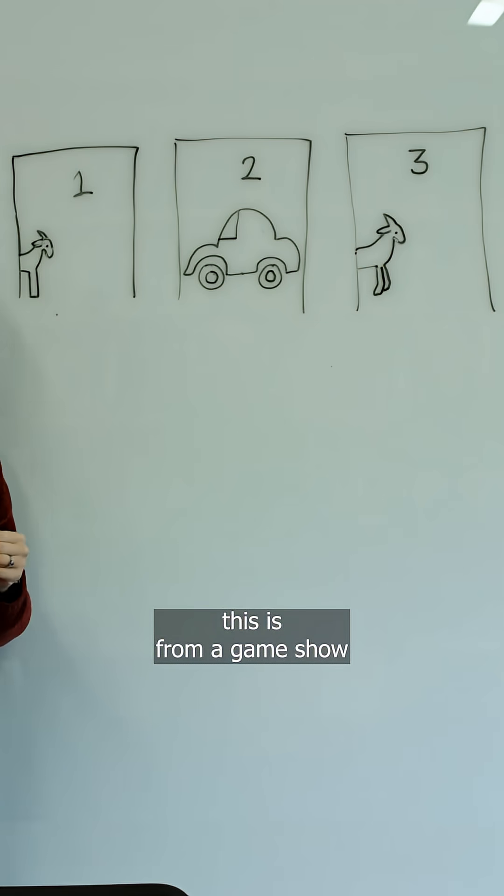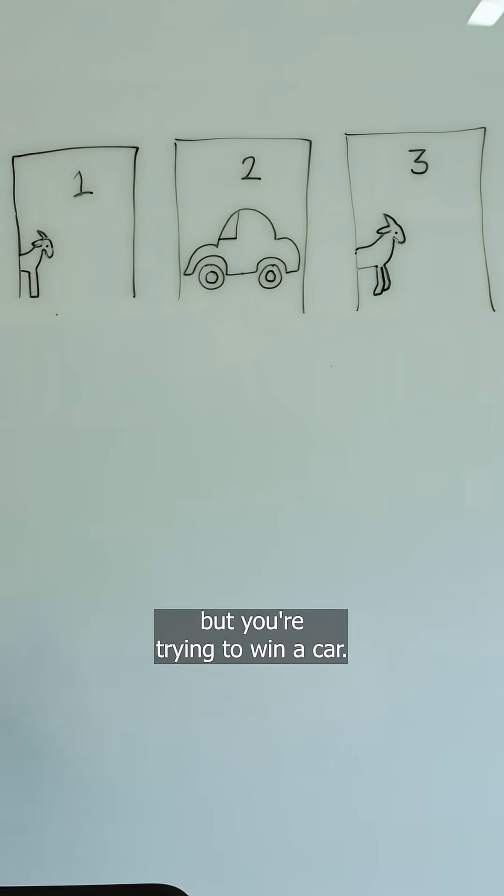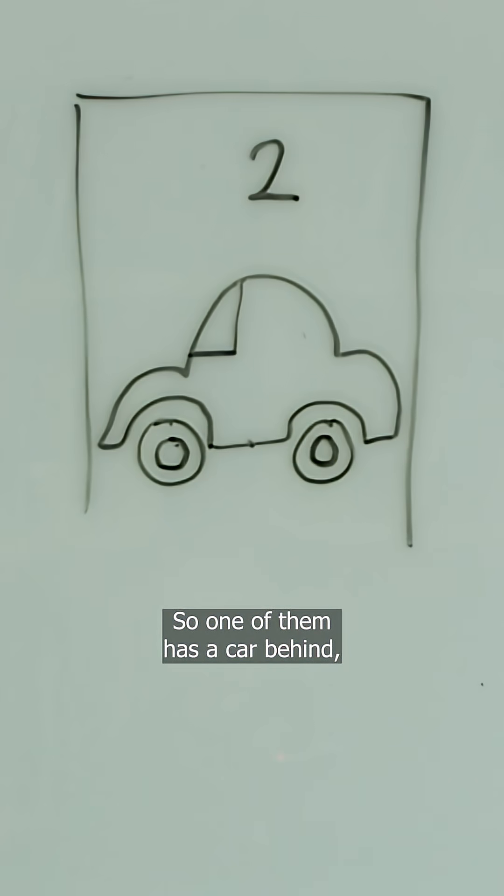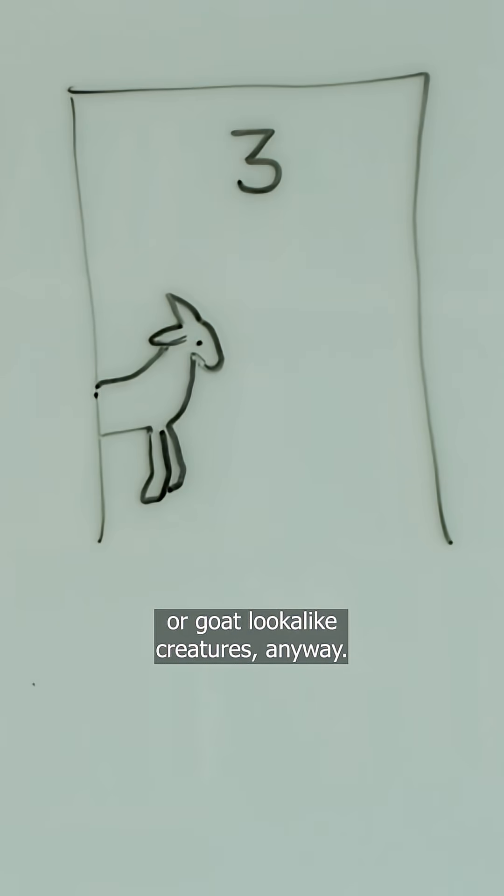To introduce this, it's from a game show where there are three doors and you don't know what's behind them. You're trying to win a car. One of them has a car behind it and two of them have goats.